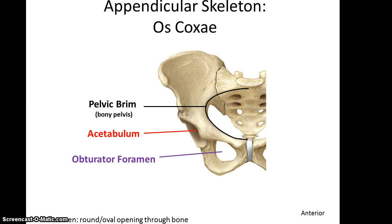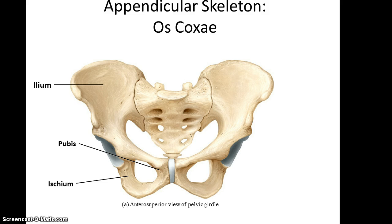Each hip bone has a large foramen called the obturator foramen, and also a socket where the femur will articulate, called the acetabulum. While we have been referring to each hip bone as an individual bone, it is actually considered to be three separate bones: the superior ilium, the inferior ischium, and the medial pubis.